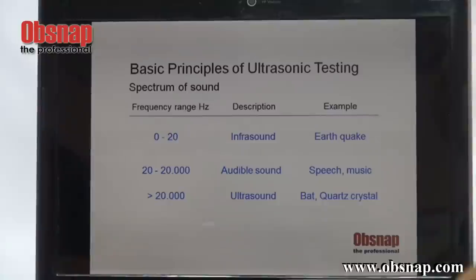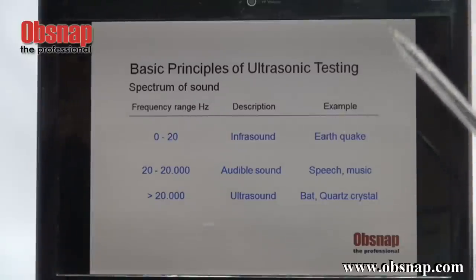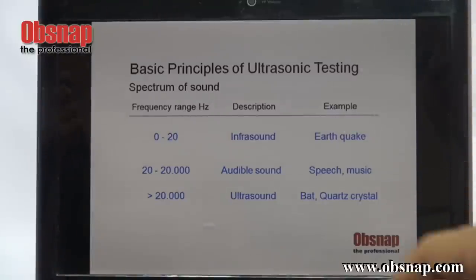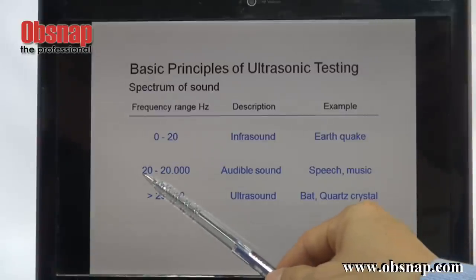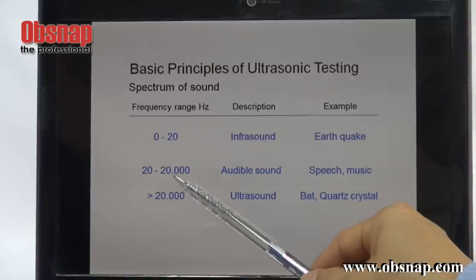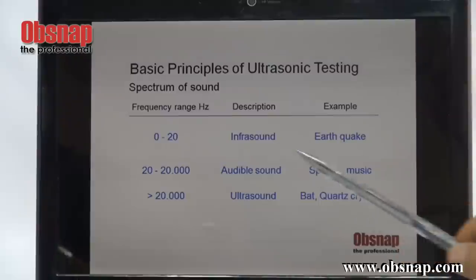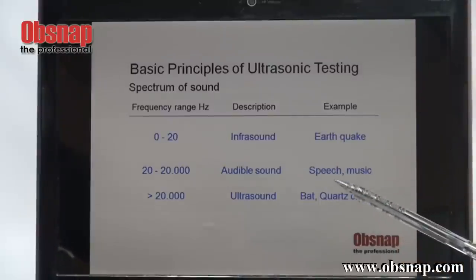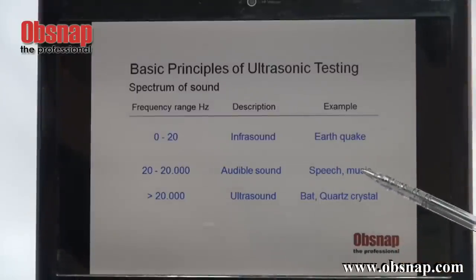Now, this frequency, as we have just explained, means in one second how many cycles it can actually make. Our ear can actually hear from 20 hertz to 20,000 hertz. Within this range, we can actually hear it, and this is called speech or also music.